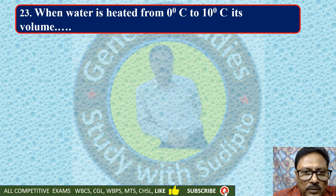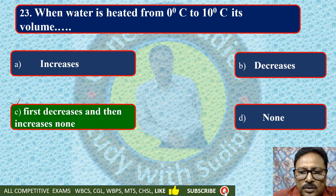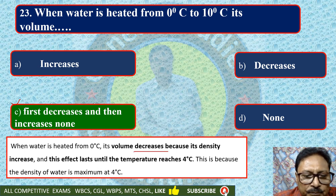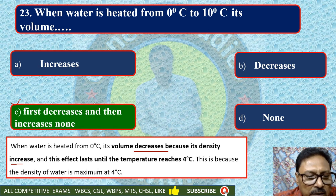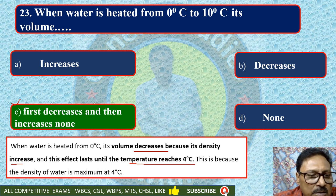When water is heated from 0°C to 10°C, its volume — increases, decreases, first decreases then increases, or none. We know the density of water is maximum at 4°C. When water is heated from 0°C, its volume decreases because its density increases. This effect lasts until the temperature reaches 4°C. After that, the volume will increase. So the volume first decreases and then increases.